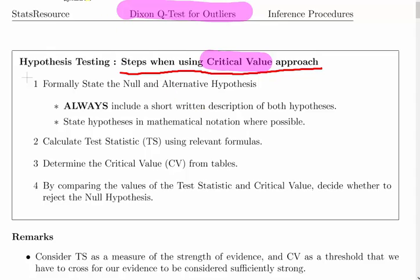So the four steps are as follows. What we should do is formally state the null and alternative hypotheses. Always include a short written description of both hypotheses. Even if you're repeating yourself a little bit, just formally state it, put it out there very clearly.